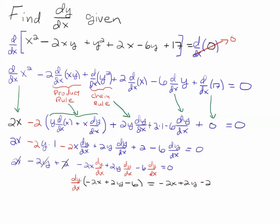But before I do that, I move everything that doesn't involve dy/dx over to the right-hand side, and that flips the sign. So the 2x becomes a minus 2x, minus 2y becomes a plus 2y, and the 2 becomes a minus 2.